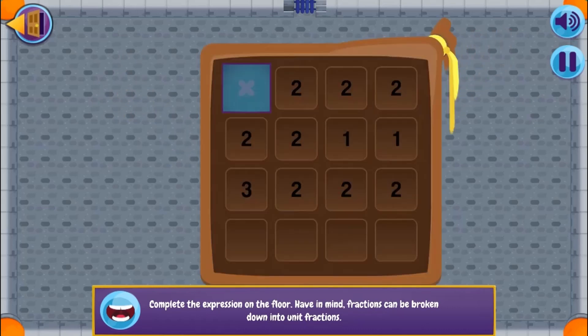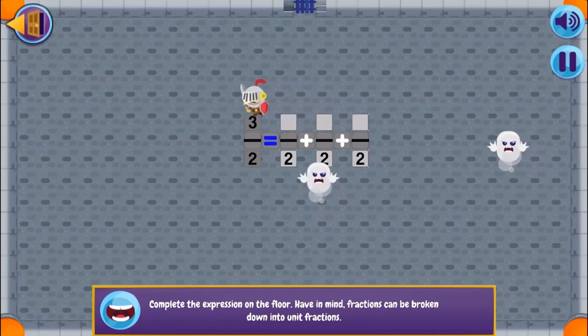Use the spacebar to attack the ghosts to collect more numbers, and then insert the right numbers into the math equation by using the arrow keys and spacebar to select the right numbers.